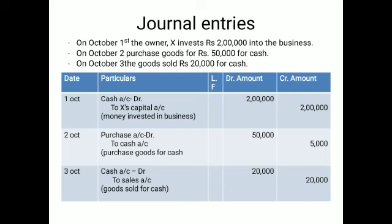When the date is listed, we write down the date. Then the particular — one journal entry is listed, and in the bracket you may see the narration of the transaction. The LF column refers to the ledger folio page number — you don't have to fill it now but it references the ledger page. The debit amount is listed in front of the debit account, and the credit amount in front of the credit account. The narration describes the transaction, such as money invested in the business.